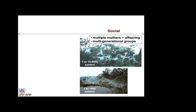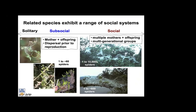In the social species, individuals remain together throughout their life and produce new generations of offspring that continue to occupy the same web. These nests contain multiple mothers, last for many generations, and depending on the species and region may contain hundreds, thousands, or tens of thousands of spiders. In the same genera, there are related sub-social species — groups of mother and offspring that remain together for a while but disperse prior to reproduction, so these colonies contain only a few dozen individuals.